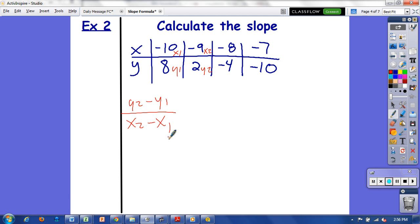Then plug it into my formula. y₂ minus y₁ over x₂ minus x₁. So y₂ is 2 minus 8, y₁ is 8, so 2 minus 8 over my x₂ is negative 9, so negative 9 minus negative 10.